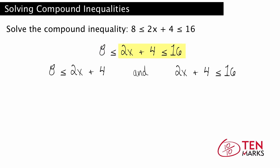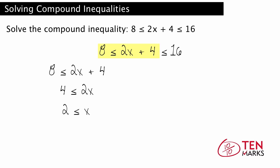Solve each simple inequality separately first. Start with 8 is less than or equal to 2x plus 4. Subtract 4 from both sides and you have 4 is less than or equal to 2x. Now divide both sides by 2 to get 2 is less than or equal to x. Now solve the second inequality: 2x plus 4 is less than or equal to 16. Subtract 4 from both sides to get 2x is less than or equal to 12, then divide by 2 to get x is less than or equal to 6.